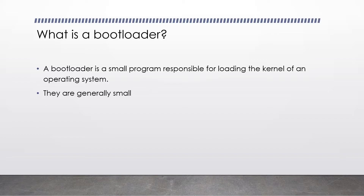When the computer first boots, we're in a compatibility mode called Real Mode. Real Mode only gives us access to 1MB of memory, and it also runs only 16-bit code. We're fairly limited at this stage. We have to load a little program called the bootloader, and the only responsibility of our bootloader is to put us into what's known as Protected Mode, which will give us access to 4GB of address space. And then we will be running 32-bit code.